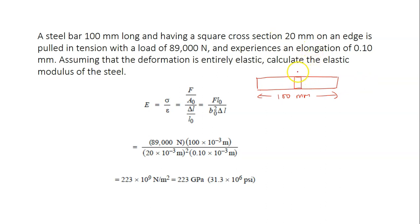So it says here that the cross-section, the edge length is 20 mm, is pulled in tension. This bar is pulled by a certain force with a load of 89,000 Newton. So the load here is 89,000 Newton and experiences an elongation of 0.1 mm.